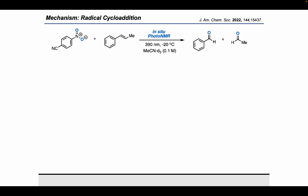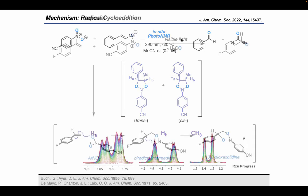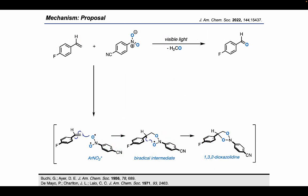We found further evidence for this non-stereospecific radical addition to the alkene with in-situ photo-NMR done at minus 20 degrees Celsius with trans-beta-methylstyrene. We saw the formation of trans- and cis-dioxazolidine. Here we can see in a time-resolved photo-NMR the growth of two peaks, almost in a 1-to-1 ratio, belonging to those key protons on the formed heterocycle. Now that we knew how our dioxazolidine was formed after the excitation of the nitroarene, we still didn't know how the intermediate then fragmented to give us our products.